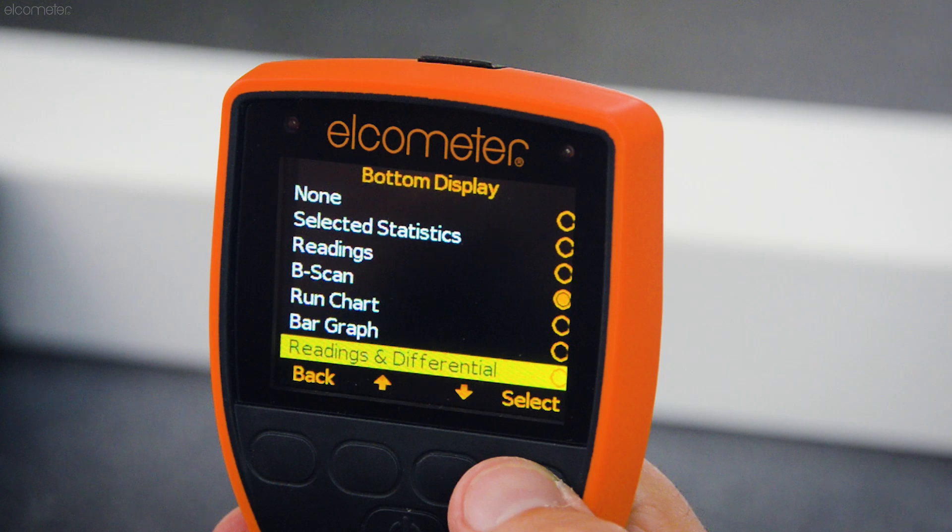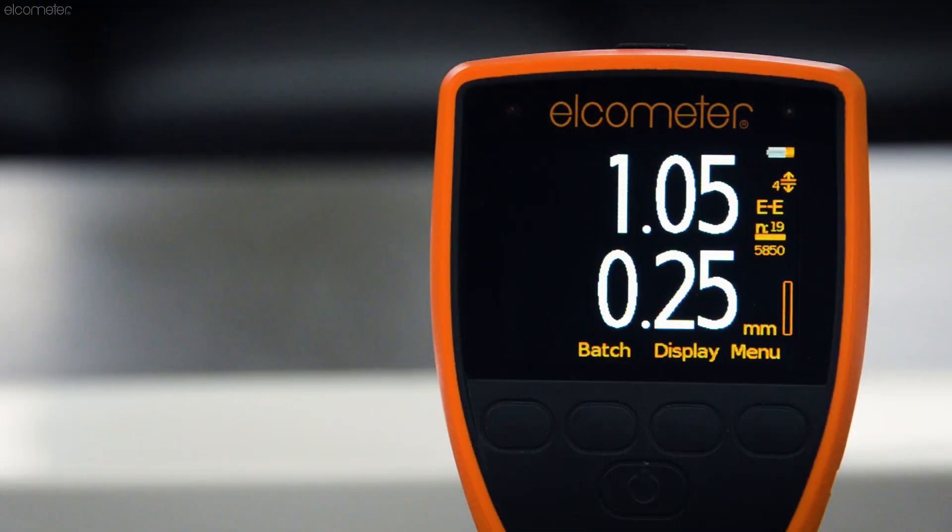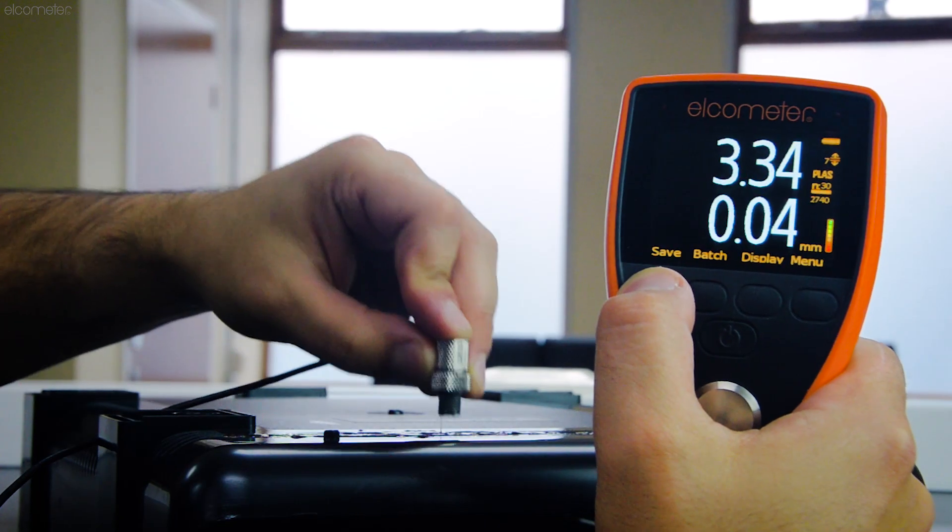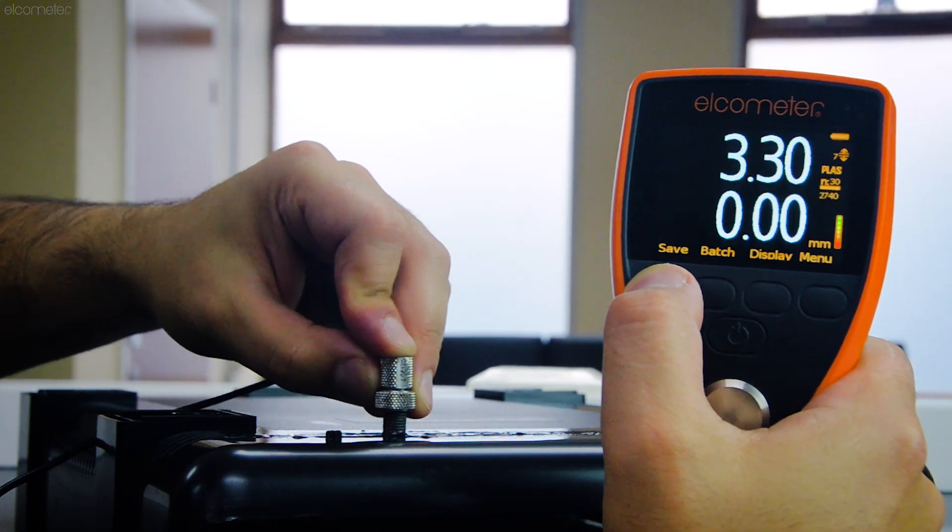Alternatively, differential mode displays the last reading and how much it differs from the user-definable nominal value, also known as the target thickness, indicating where the material is thinner or thicker than expected.